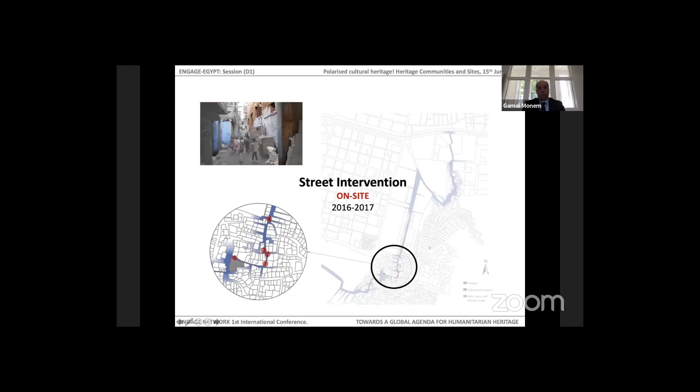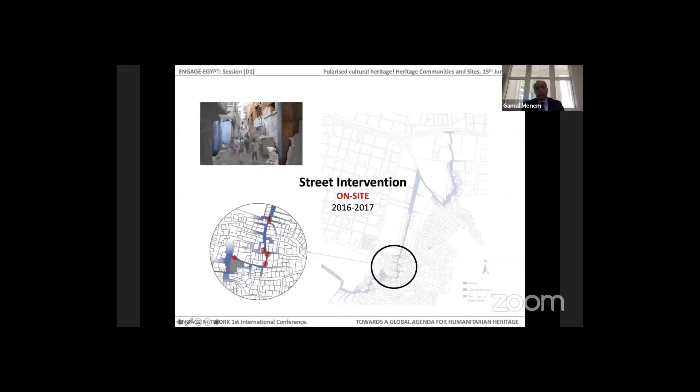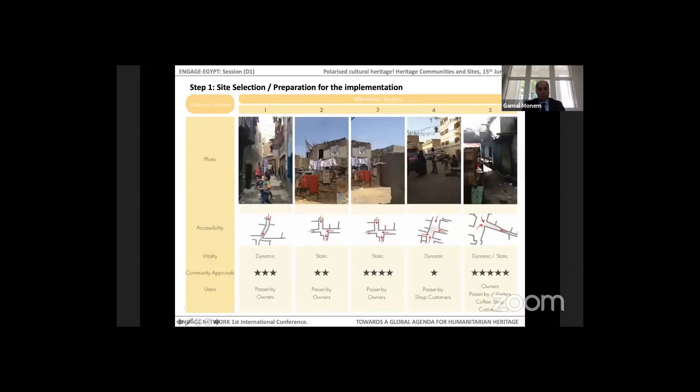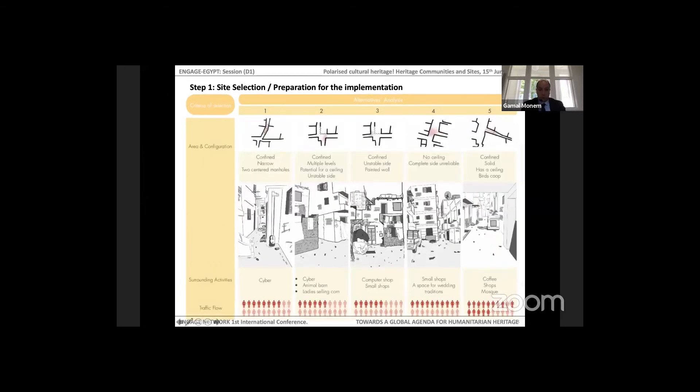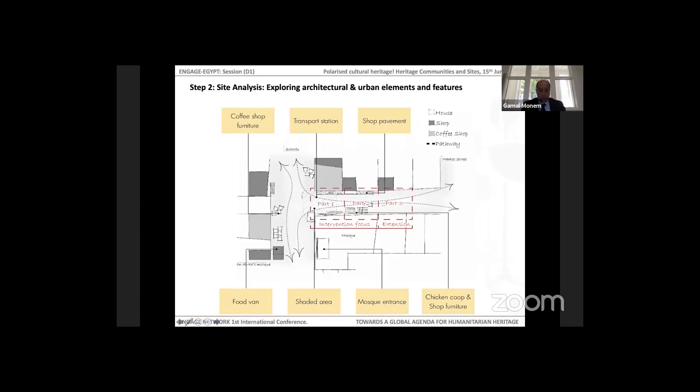The street intervention on site is bringing such theories into practice and it was designed based on three main steps. The first step is the site selection or preparation for the implementation. It includes defining different criteria for the selection based on group discussion and community discussion, selecting five locations and going with the criteria through the different sites to define and decide for one of the locations. Part of the criteria was the community's approach and approval, but also the use of the space and how the area is configured, the surrounding activities and traffic flow. Finally, one of the sites was selected by the community together with the academics.